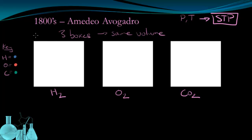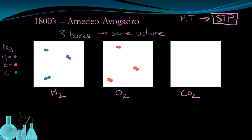Avogadro discovers that putting three different gases into boxes of the same volume, at the same temperature and pressure, they all have the same number of molecules present. In the first box of hydrogen, we find three molecules of hydrogen gas. In the second box with oxygen, we find three molecules of oxygen gas. And in the last box with carbon dioxide, we find three molecules of carbon dioxide.